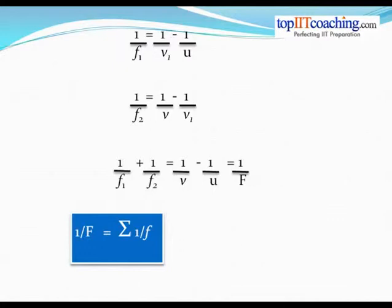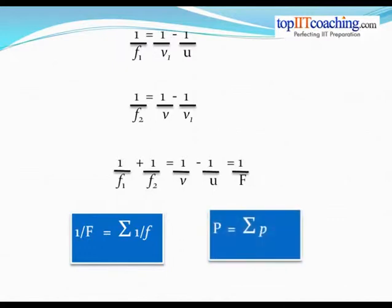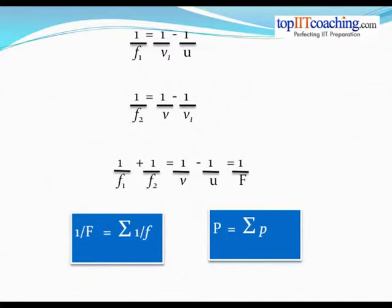Since 1/f is the same as power — we studied at the end of the last chapter that 1/f is the power of a lens — the final power of the lens system P is the summation of the individual powers: P = Σp. So that's the first expression we have derived, and already we're ready to solve a problem.